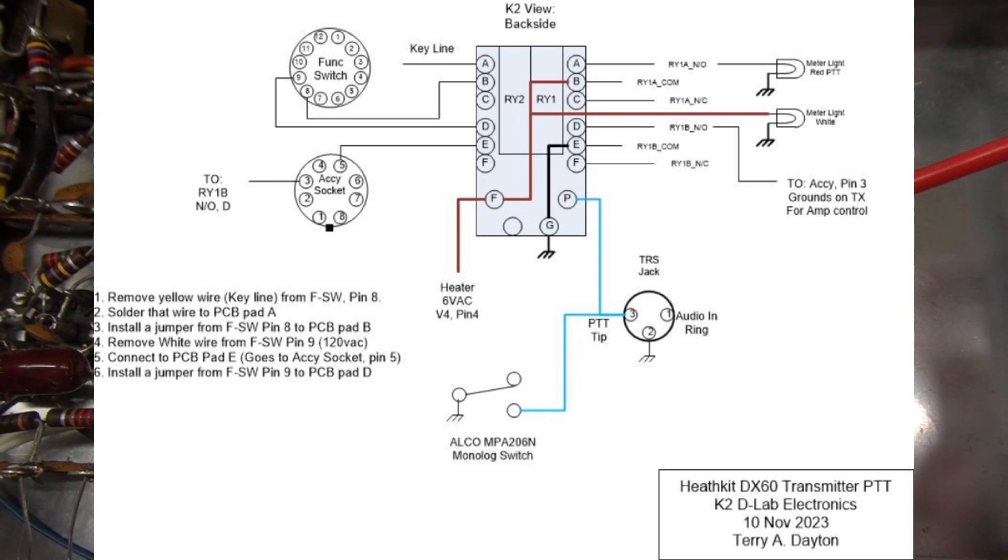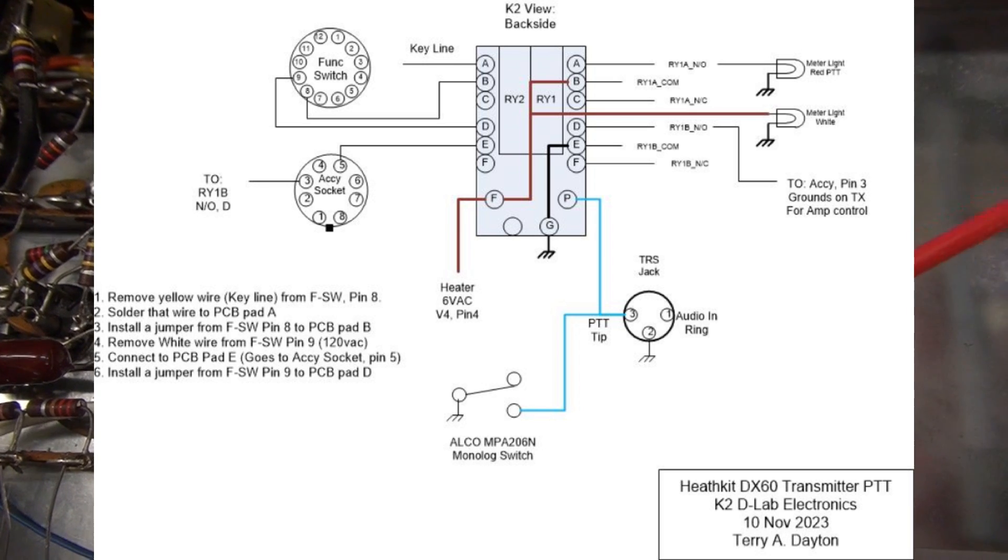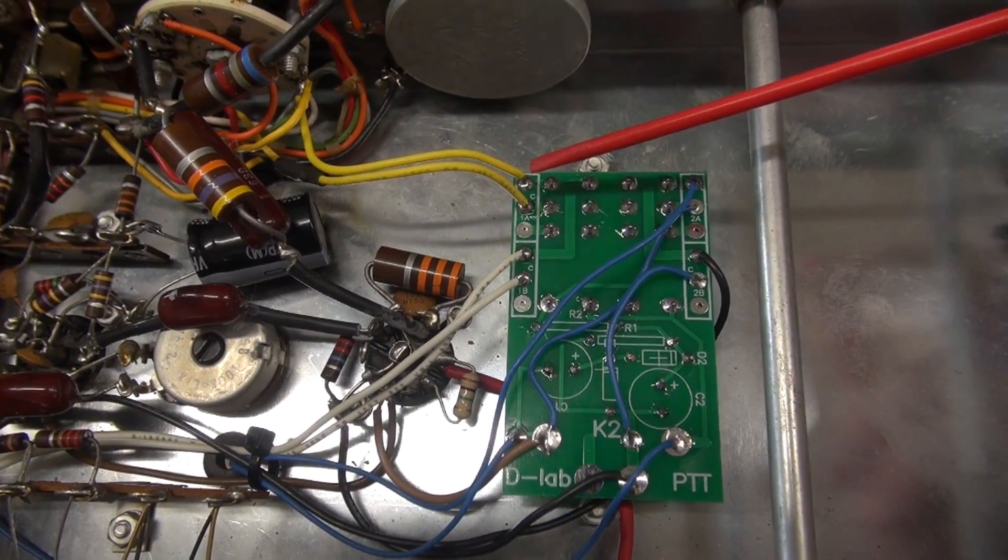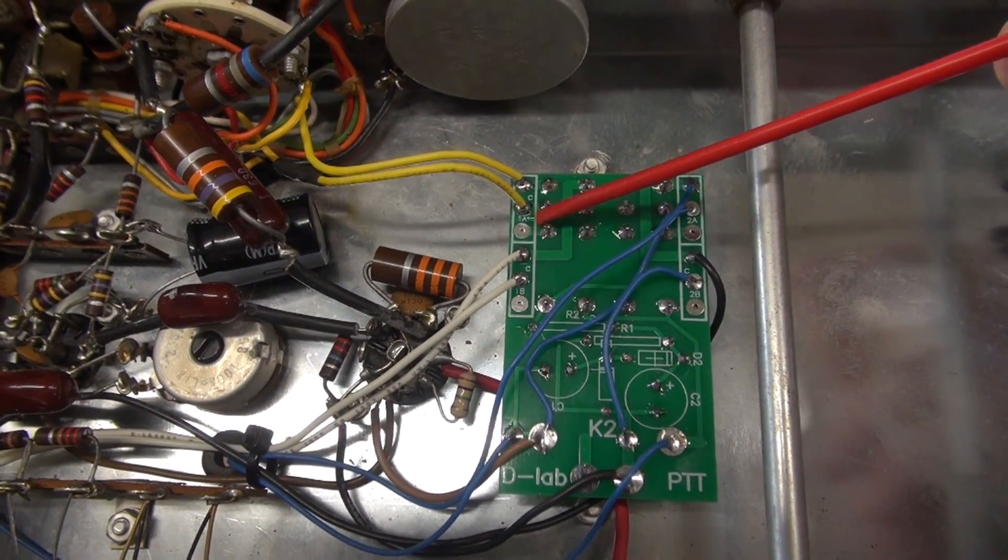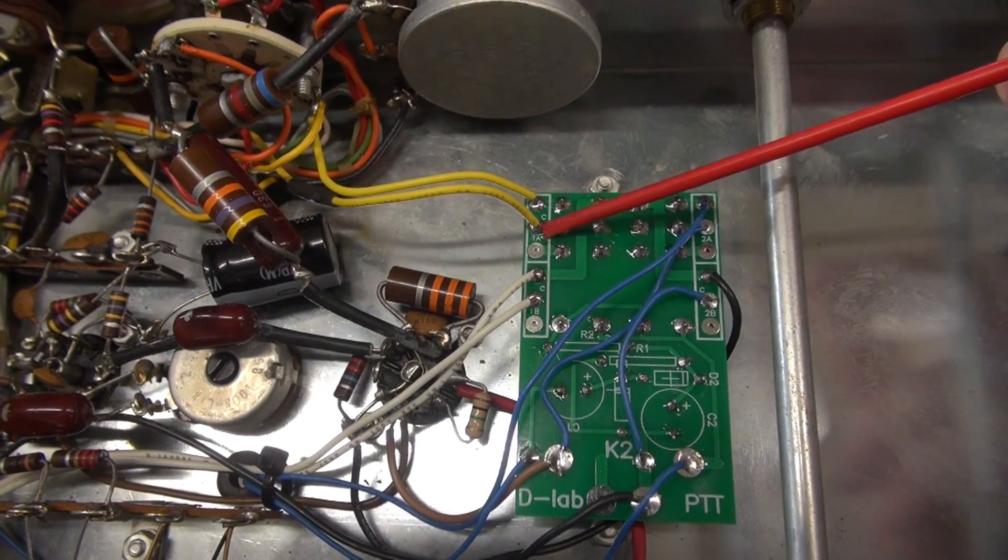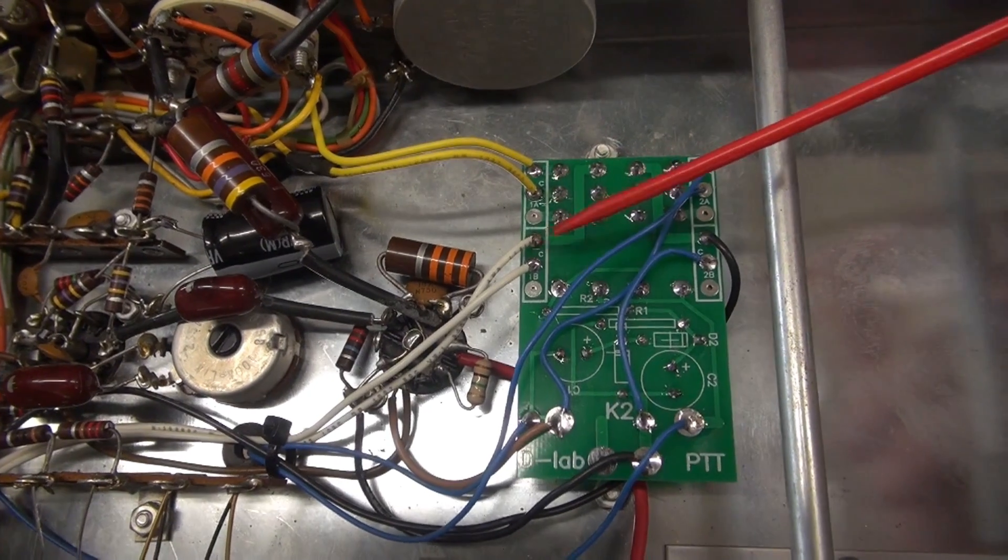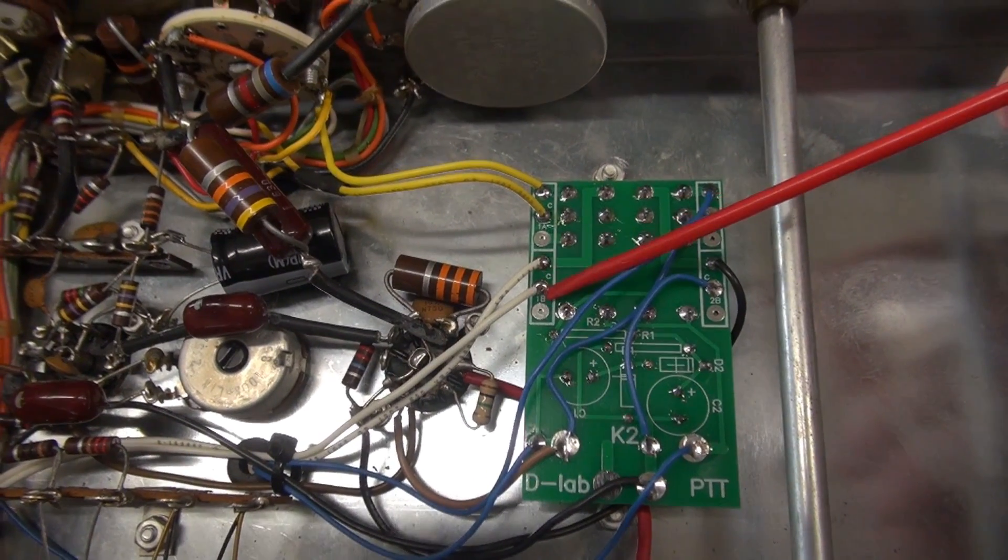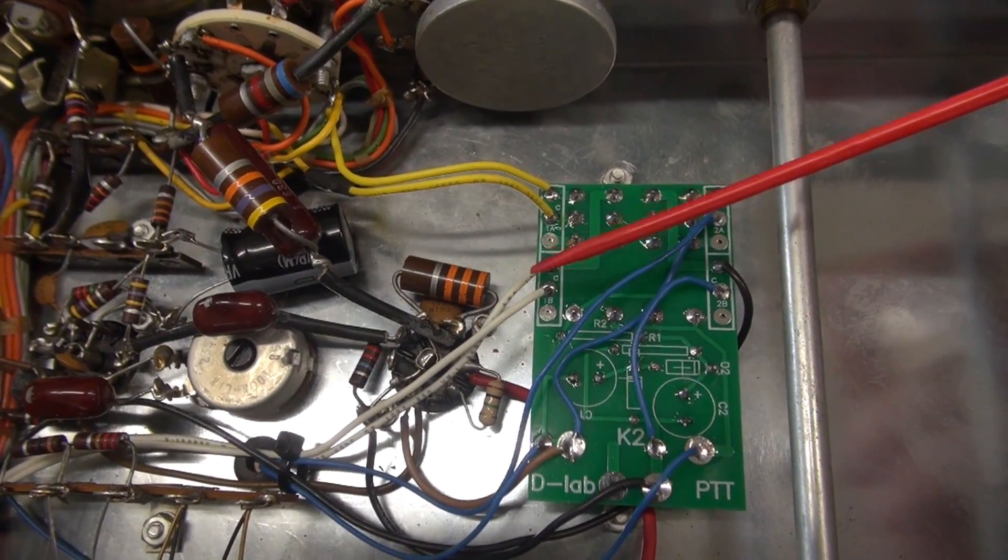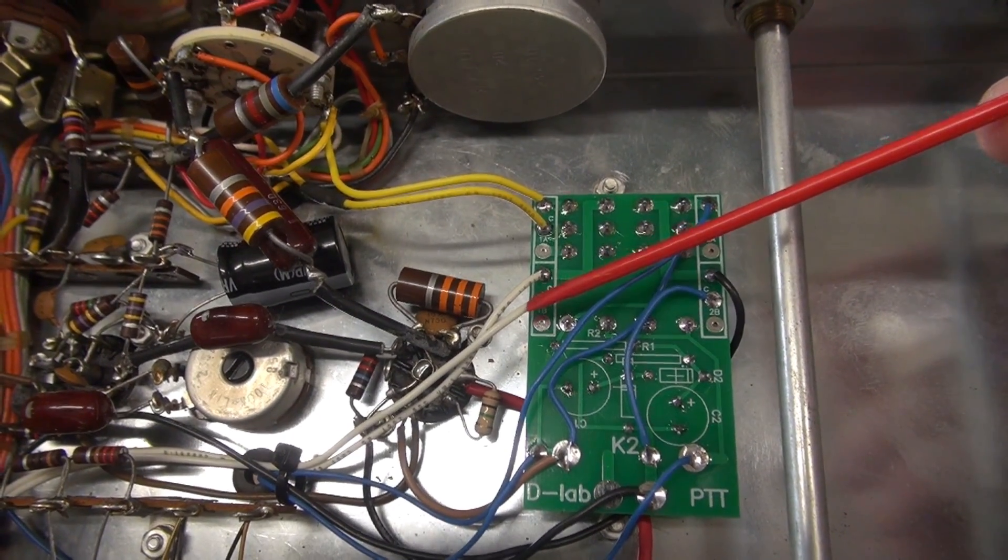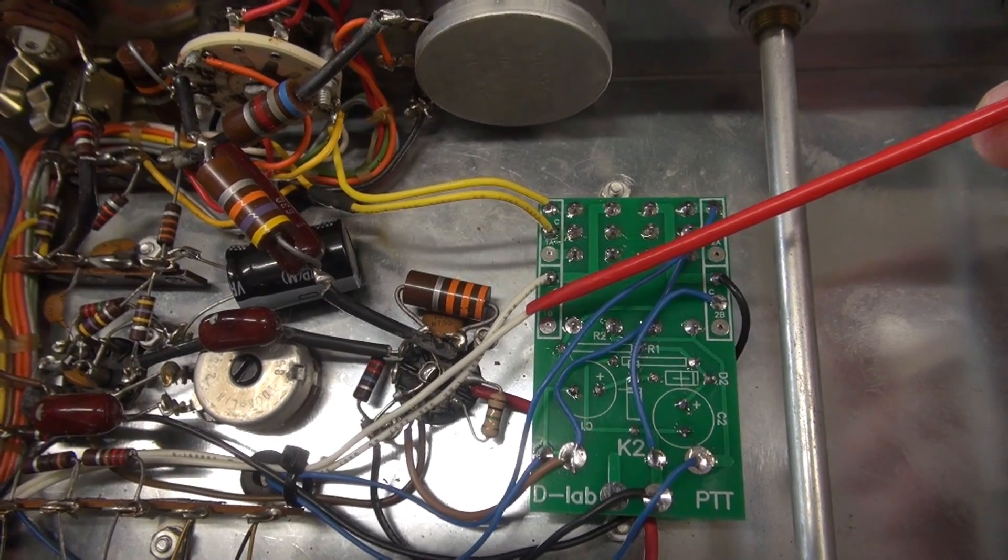K2 module installation is complete. I'm going to walk you through the connections and I'll provide a block diagram. We'll start on this side. The two yellow wires are the negative keying voltage coming off of pin 8 of the function switch. Then we have the two white wires and they come off of pin 9 of the function switch. The two white wires provide the 120 volt switching for your dow key relay coil.